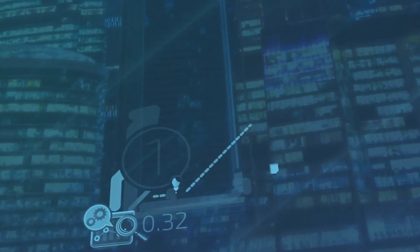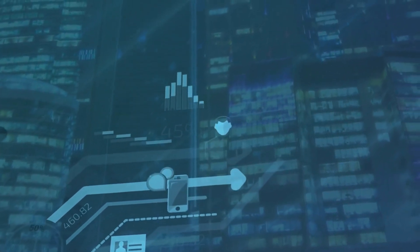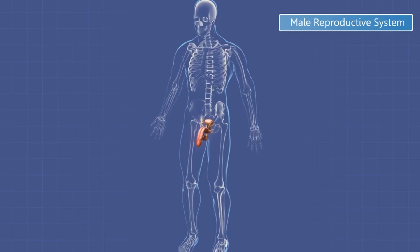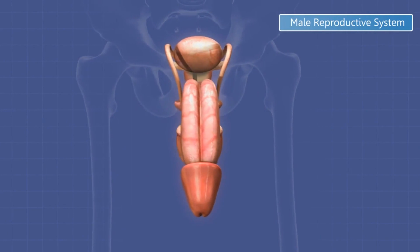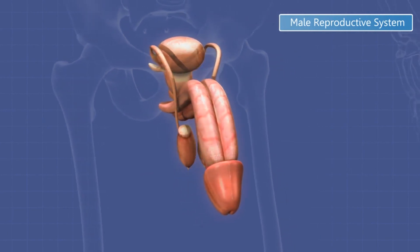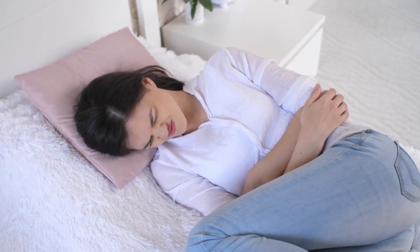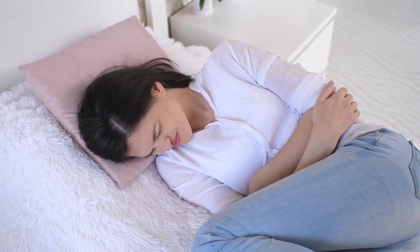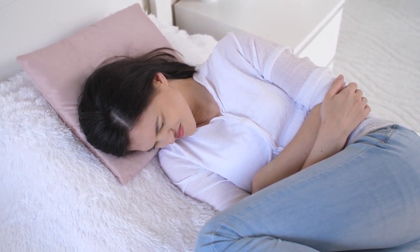Causes and risk factors. The exact causes of ovarian cysts are not always clear, but several factors may contribute to their development. Hormonal imbalances — disruptions in hormone levels, particularly during the menstrual cycle — can lead to the formation of cysts. Women with endometriosis have an increased risk. Polycystic ovary syndrome (PCOS) is a hormonal disorder that often results in the formation of multiple cysts on the ovaries.